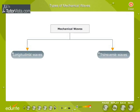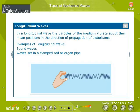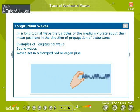Mechanical waves are classified as longitudinal waves and transverse waves. In a longitudinal wave, the particles of the medium vibrate about their mean positions in the direction of propagation of disturbance.